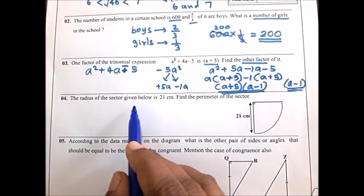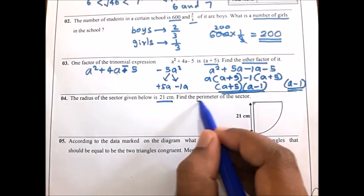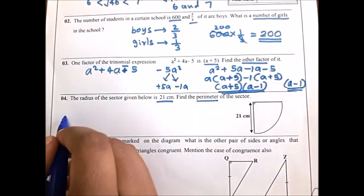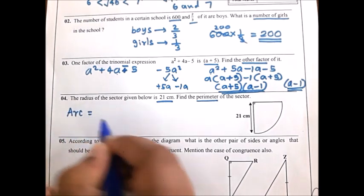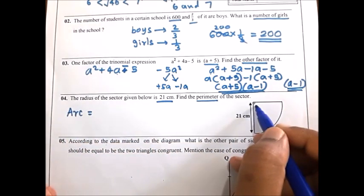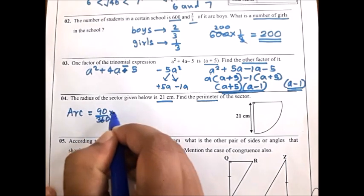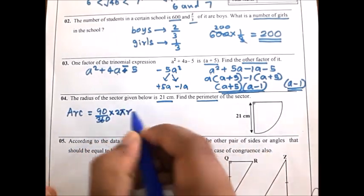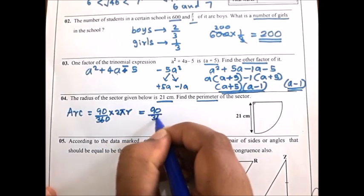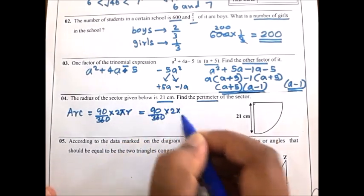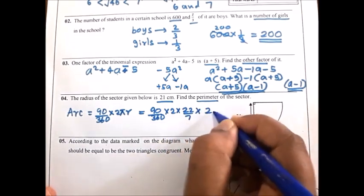Now look at the fourth question. The radius of the sector is 21. Find the perimeter of the sector. First find the length of the arc. Here the angle is 90 degrees. So we calculate 90 over 360 into 2πr, using 22 over 7. Radius is 21.